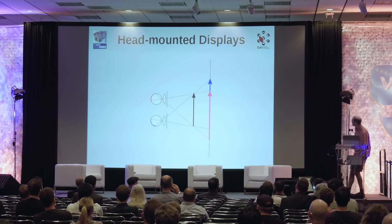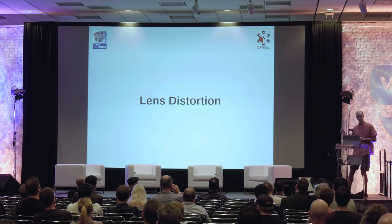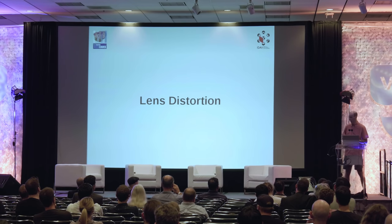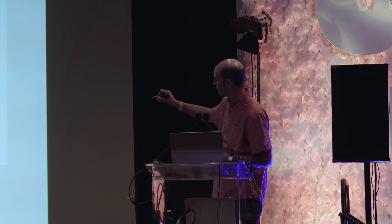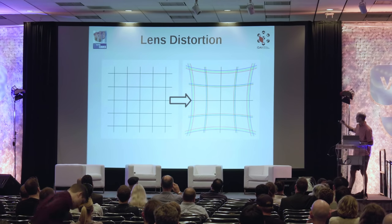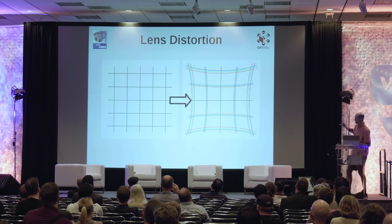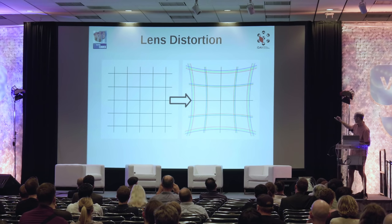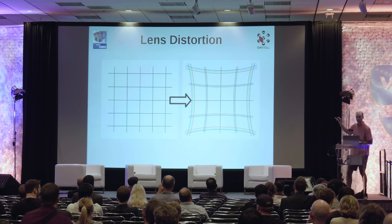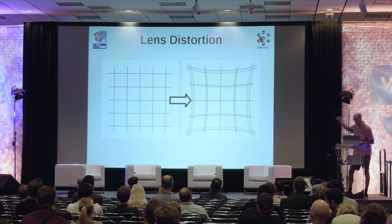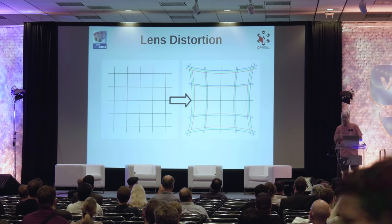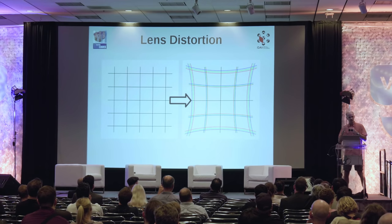Ideal lenses would make that the whole story, but ideal lenses are neither light nor cheap. If you take a nice grid of straight lines, draw it on the HMD screen, and look through the lens, you get distortion. There are two types: geometric distortion, where straight lines turn into curves — called pin cushion distortion — and chromatic aberration, where black-and-white lines split into primary colors, creating color fringes.